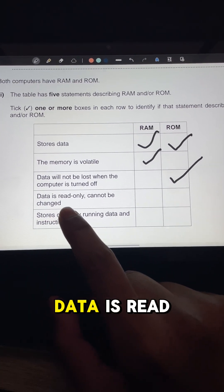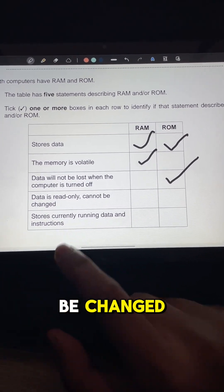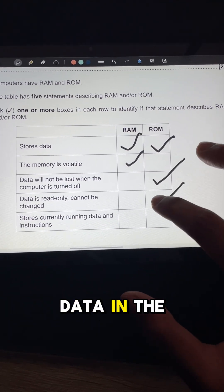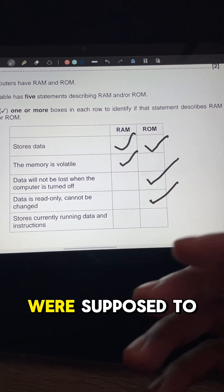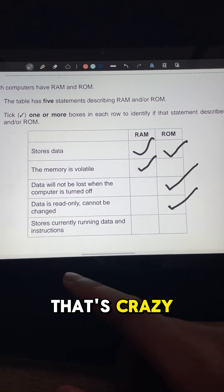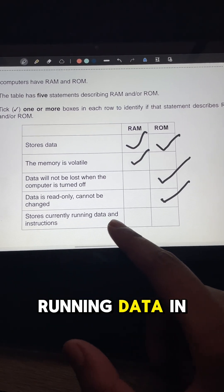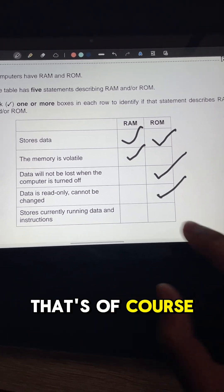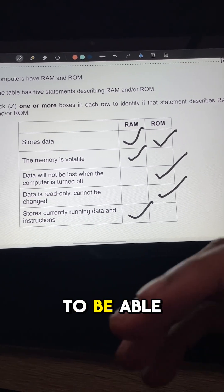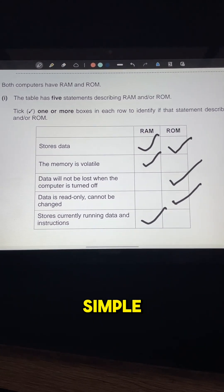Data in ROM is read-only and cannot be changed. You cannot change the data in there — like if you were supposed to change the BIOS, it'll just mess up your whole computer. And RAM stores currently running data and instructions, because you need to be able to access that memory when running the PC.